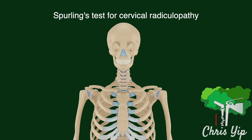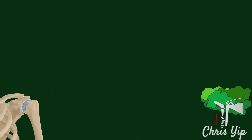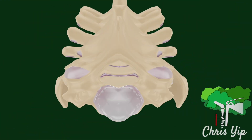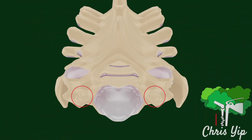The Spurling's test is used to identify cervical radiculopathies. The cervical vertebra, except for C1 and C2, consists of the vertebral body and the transverse foramen, where the vertebral arteries pass through.